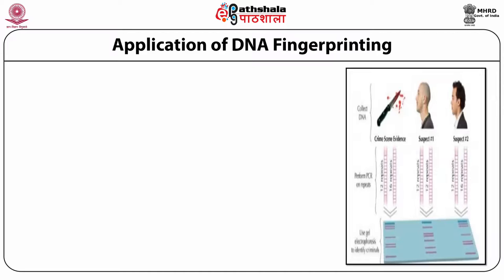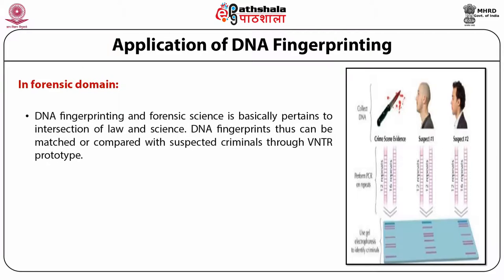You will now be acquainted with different applications of DNA fingerprinting, including application in the forensic domain. DNA fingerprinting and forensic science pertain to the intersection of law and science. DNA fingerprinting is highly specific and unique — no two individuals have exactly the same DNA fingerprints, except identical twins. DNA can be isolated from whatever evidence is collected at a crime scene, such as blood, hair, skin cells, saliva, semen, and tissue. DNA fingerprints can thus be matched or compared with a suspected criminal through the variable number of tandem repeat prototype.